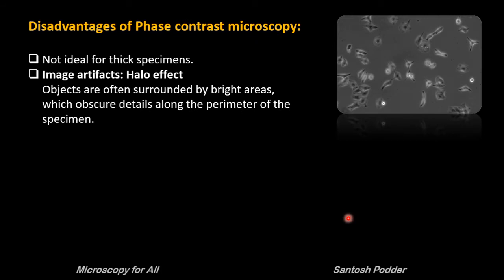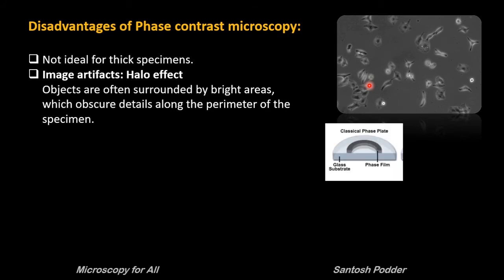There are some disadvantages of phase contrast microscopy. This technique is not ideal for thick specimens. Sometimes objects are surrounded by bright areas which obscure the details along the perimeter of the specimen. This is called the halo effect. The halo occurs in phase contrast microscopy because the circular phase ring located in the objective phase plate also transmits a small degree of diffracted light from the specimen, so it is not restricted to passing the surround wave only.